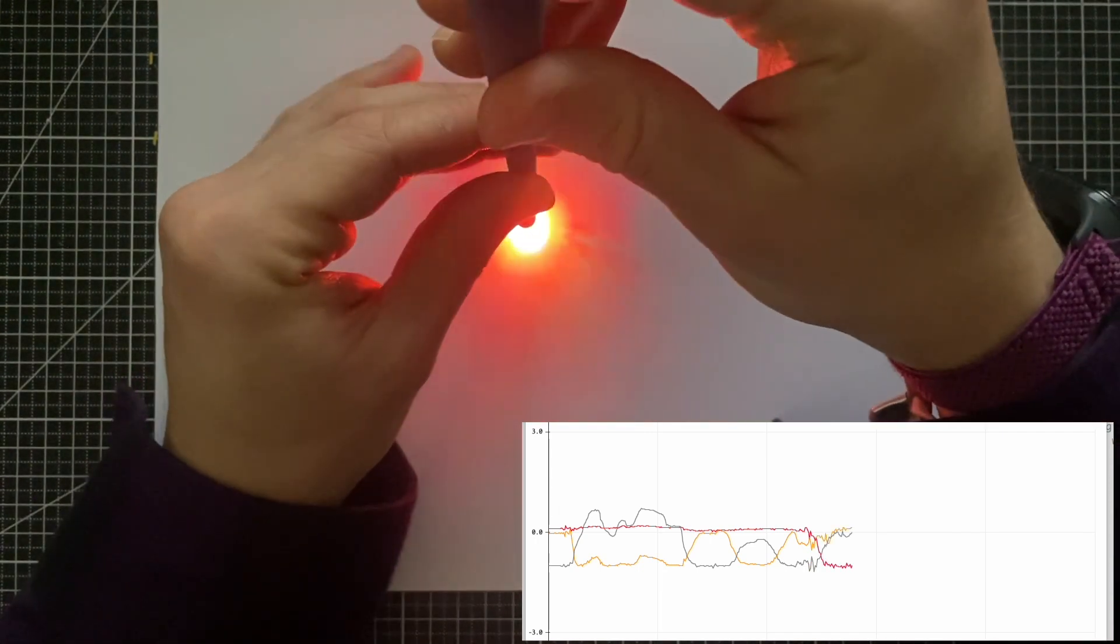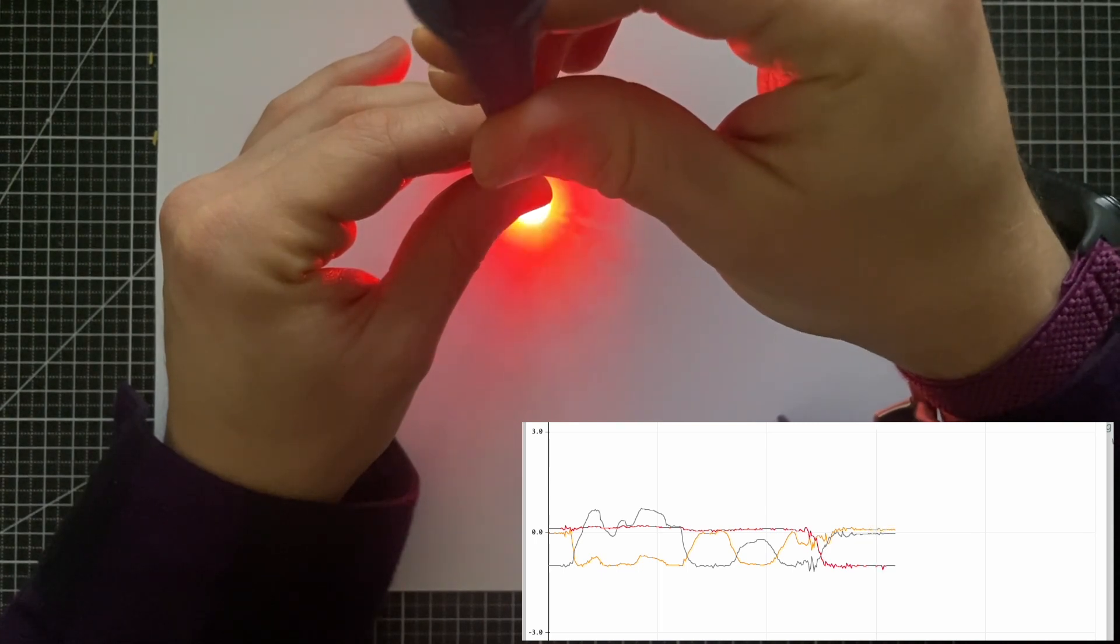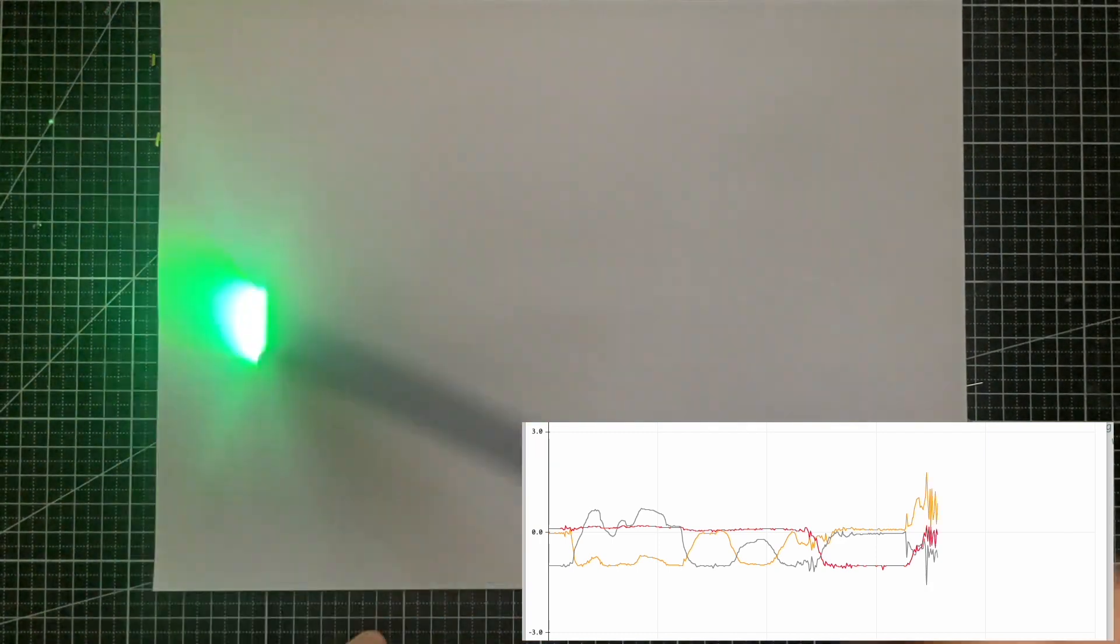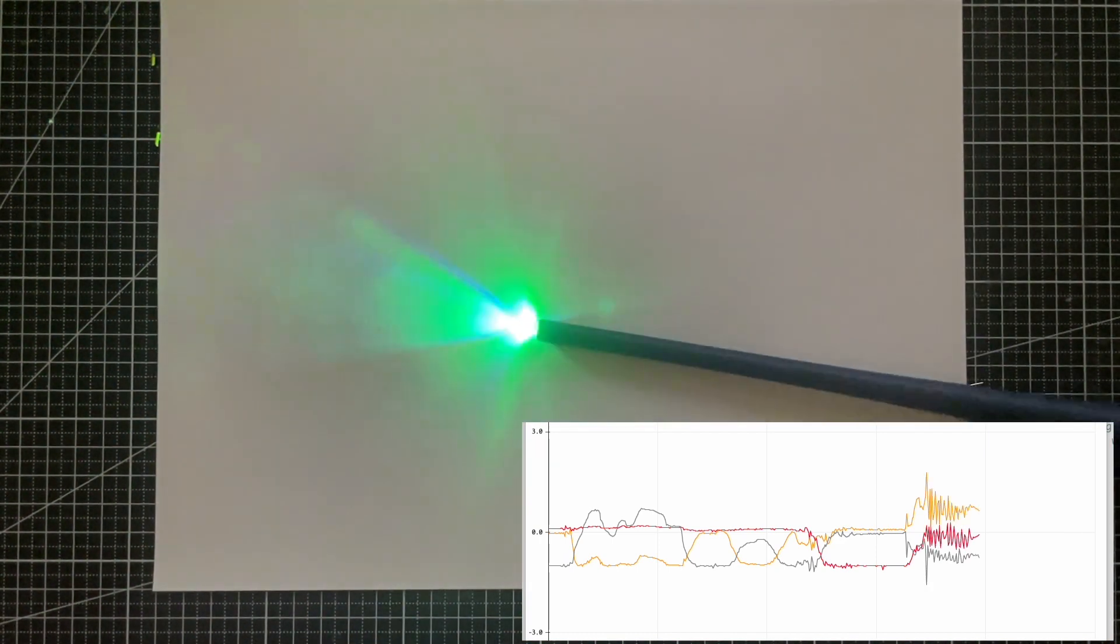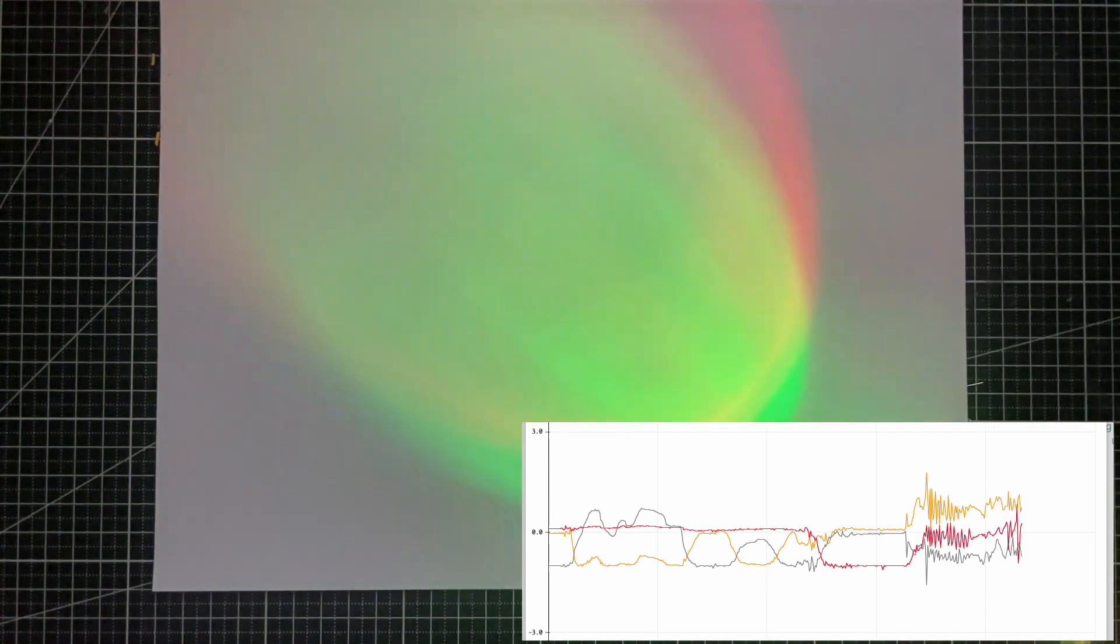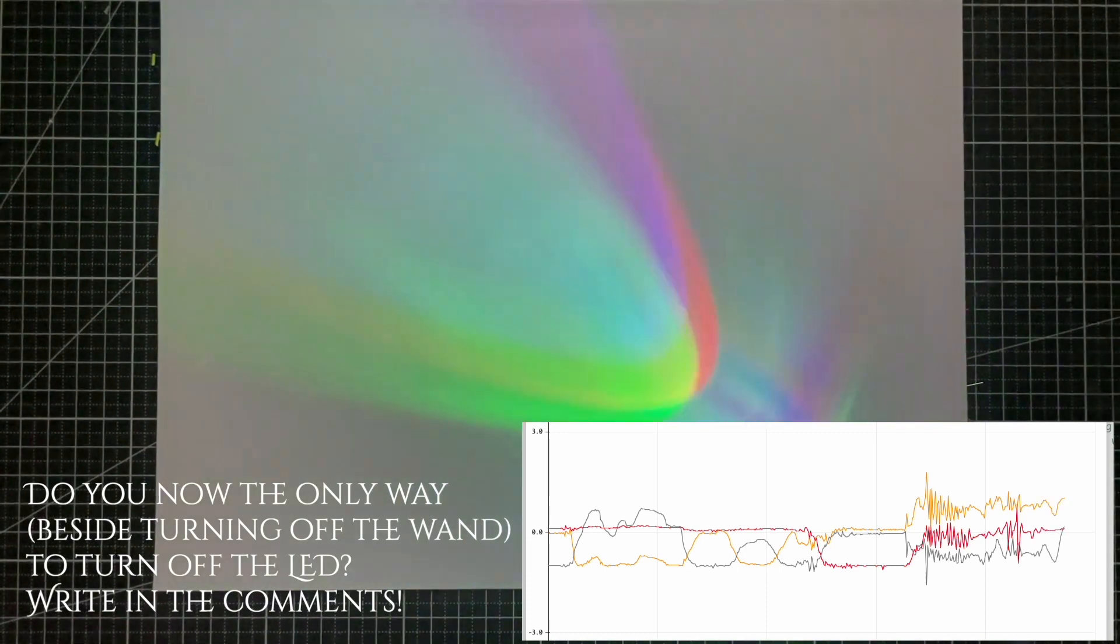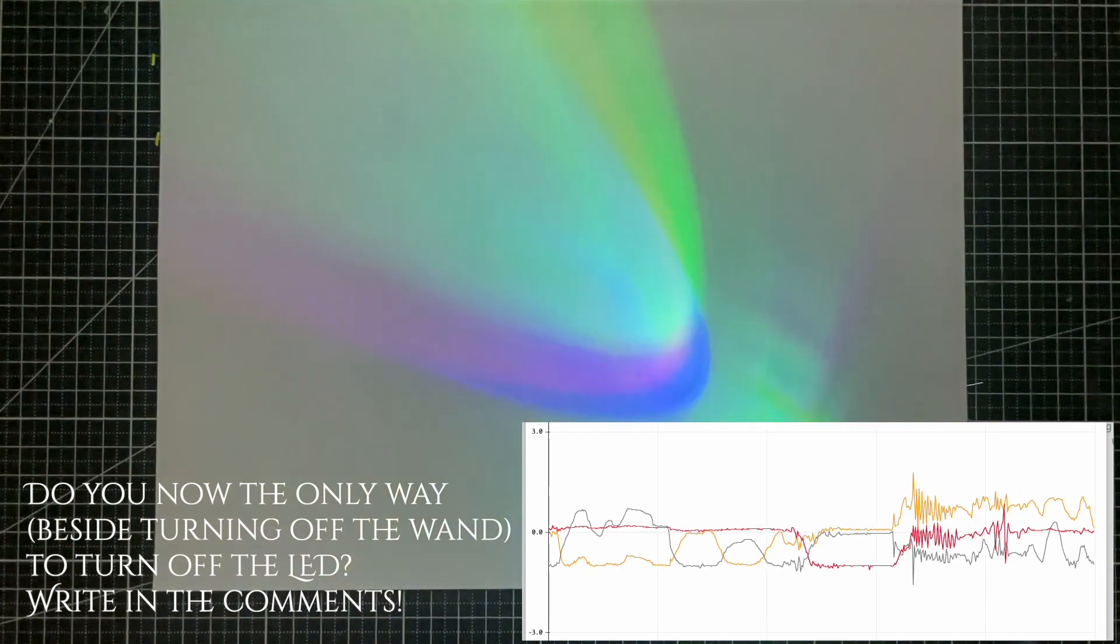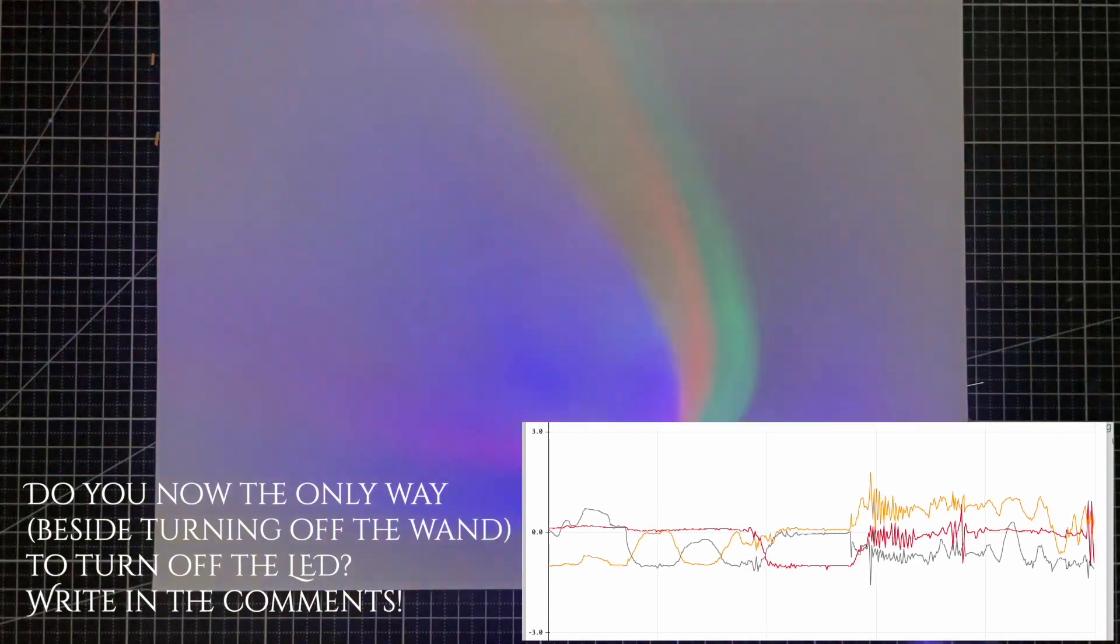And if I put it this side you can see that the red value is high. And if I wave it around, the colors mix so we get different colors in dependence of the acceleration. And the funny thing is there's only one way to turn the LED off. If you know how, you can write it in the comments.